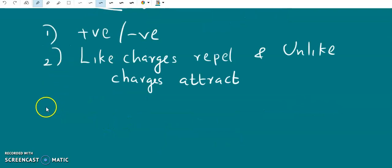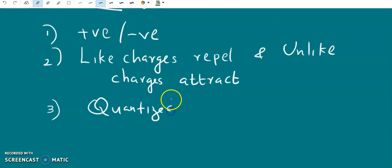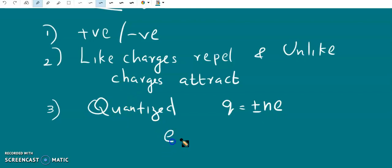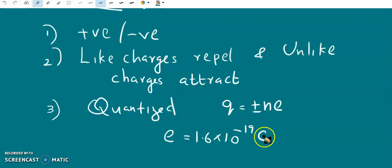The third property is that the electric charge is quantized. Quantized means it can only take discrete values — it cannot take all possible values. For a microscopic system at the atomic level, Q is equal to plus or minus nE. The total charge is either a positive or negative integral multiple of the basic unit of charge E, which is the charge of an electron equal to 1.6 × 10⁻¹⁹ Coulombs. The unit of charge is Coulomb.